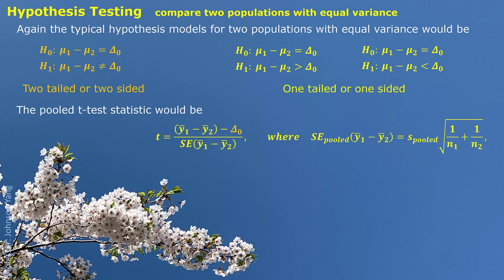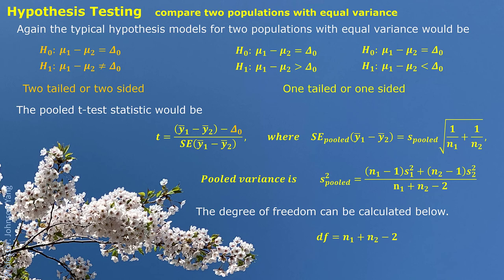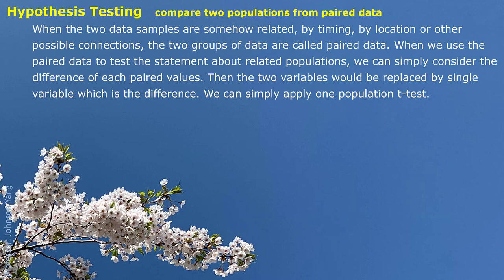The typical hypothesis models for two populations with equal variance are similarly described as two-sided or one-sided models. The pooled t-test statistic, pooled variance, and degree of freedom are as expressed. The format only slightly changes compared to one population. When the two data samples are somehow related — either by timing, location, or any other possible connection — the two groups of data are called paired data. When we use paired data to test a statement about a related population, we simply consider the difference of each paired value, replacing the two variables with a single variable: the difference.